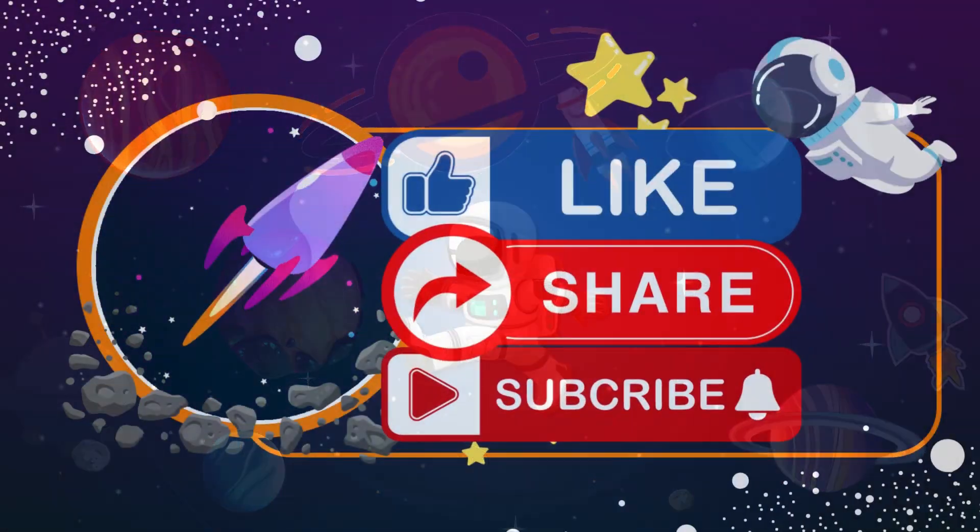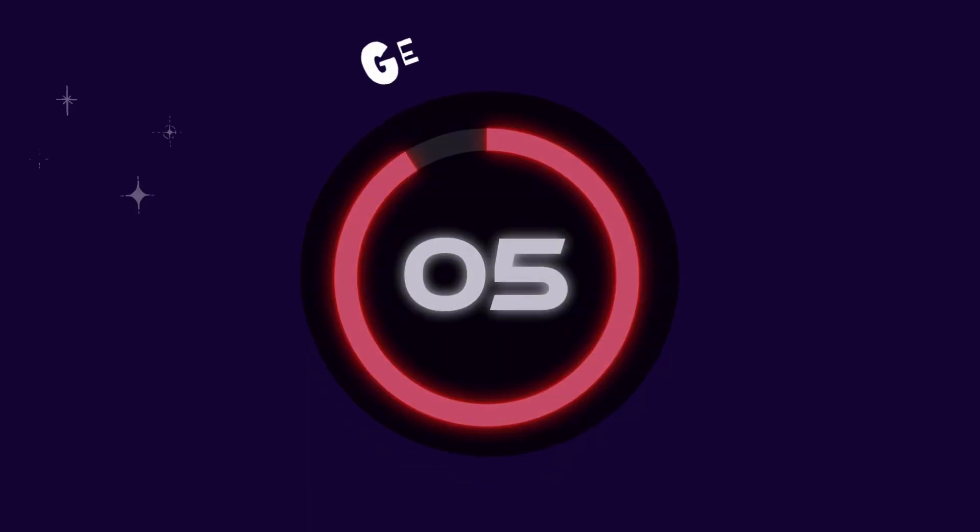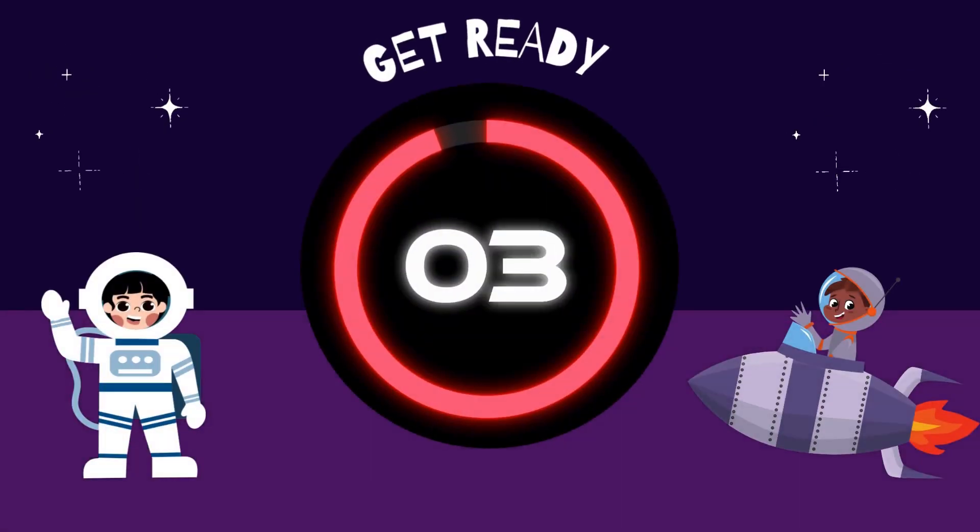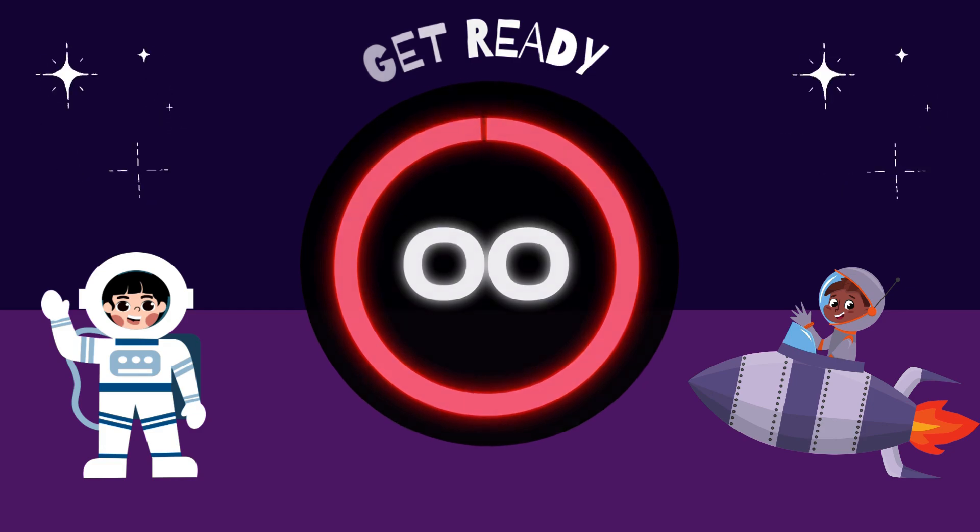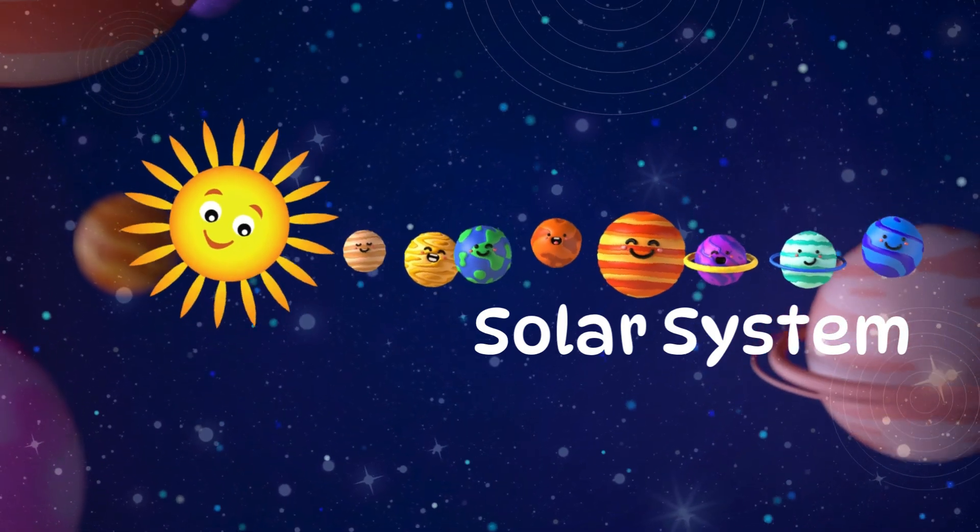Please support me. Like, share and subscribe. Get ready. 5, 4, 3, 2, 1. There are 8 planets and they all go around the sun.